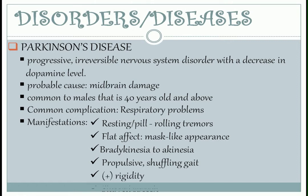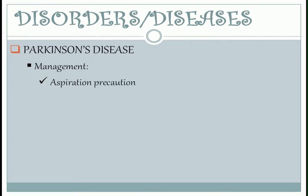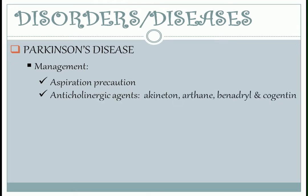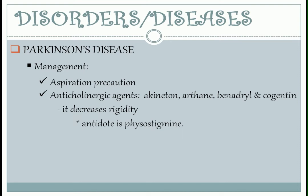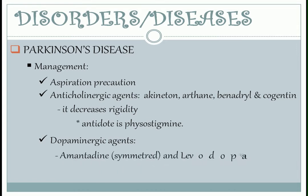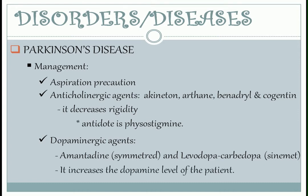Additional manifestations include positive rigidity, slurred speech, microphonia which is a low-pitched voice, and micrographia which is small writings. Management: aspiration precaution. Anticholinergic agents like Akineton, Artane, Benadryl, and Cogentin — you can use the code CABA to remember them. These anticholinergics decrease acetylcholine, resulting in decreased rigidity. The antidote is physostigmine. Next are dopaminergic agents like Amantadine and Levodopa-Carbidopa, which increase the dopamine level of the patient.